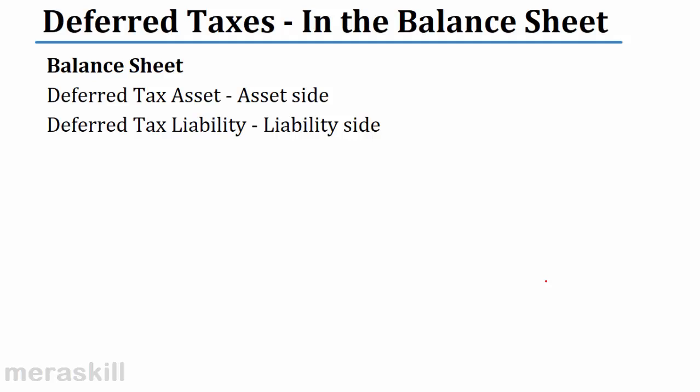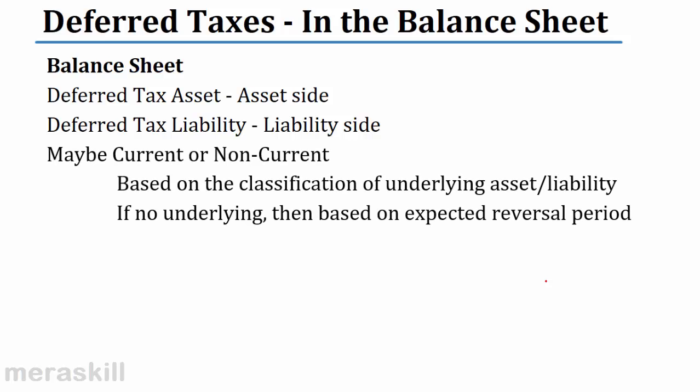In the financial statements, deferred tax asset appears on the asset side and deferred tax liability appears on the liability side. These may be classified as current or non-current based on the underlying asset or liability. For example, if the difference is due to depreciation on fixed assets, it would be a non-current deferred tax asset or liability. If there is no underlying, classification depends on the expected reversal period — within one year is current, beyond one year is non-current.